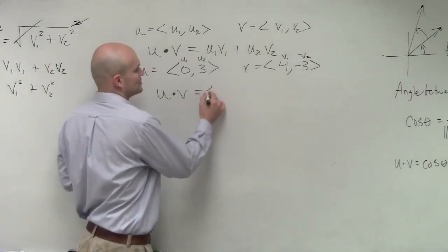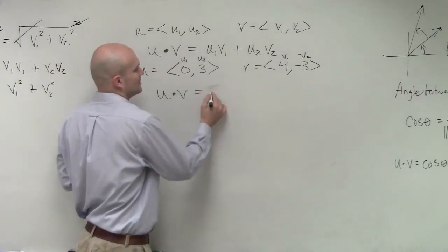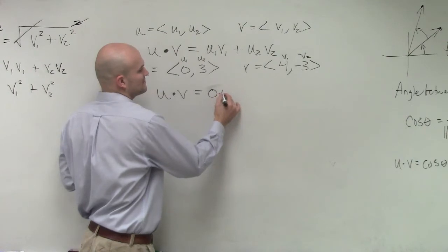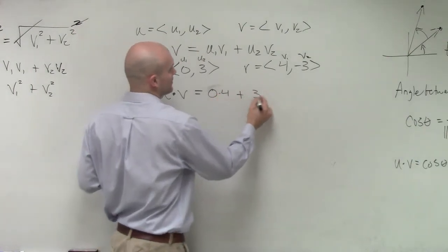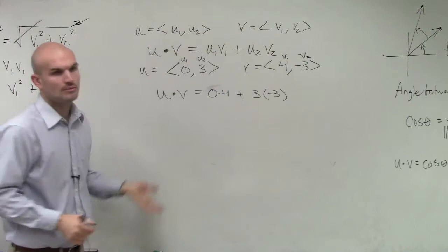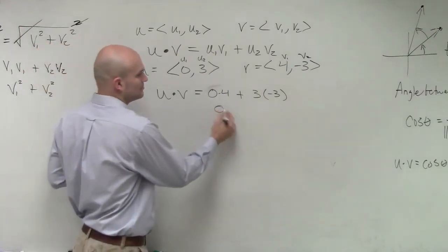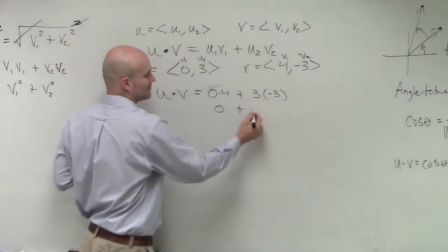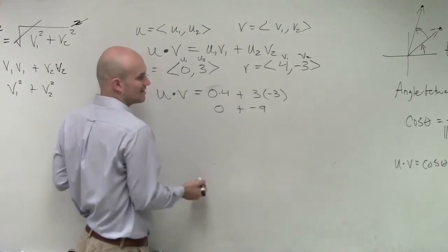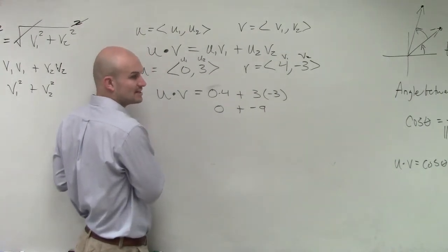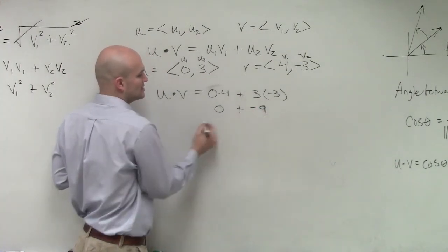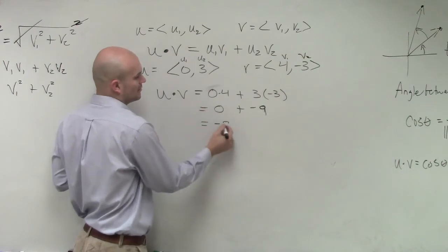So the dot product is going to produce 0 times 4 plus 3 times negative 3. Well, 0 times 4 is obviously 0, and 3 times negative 3 is going to be negative 9, which just is going to equal a scalar of negative 9.